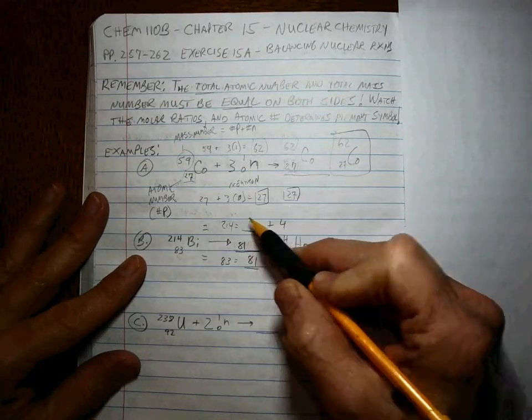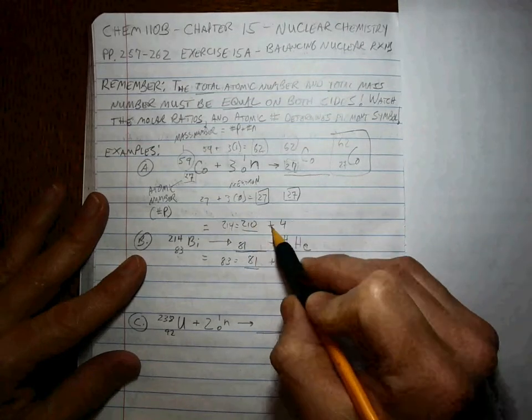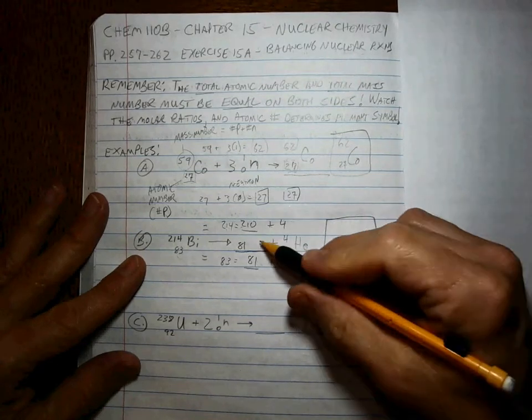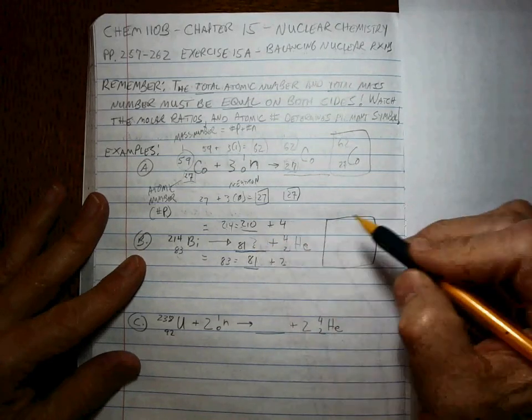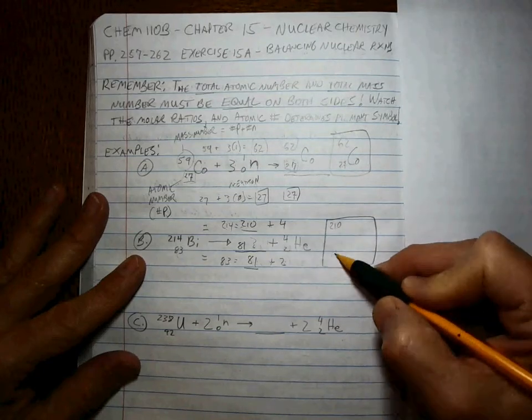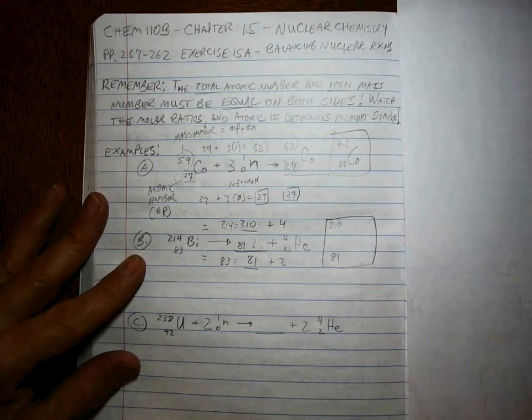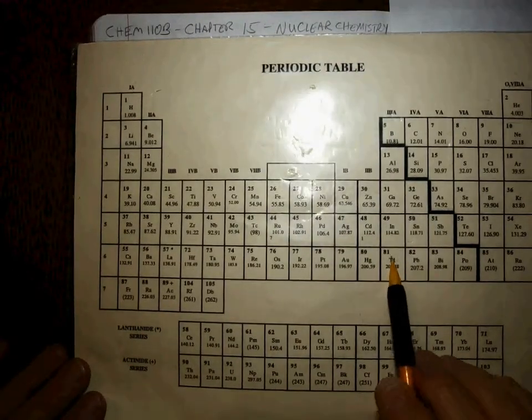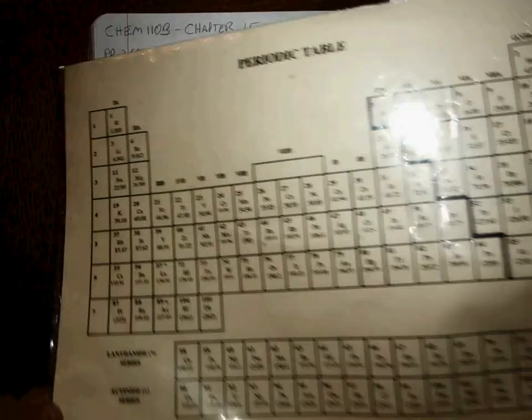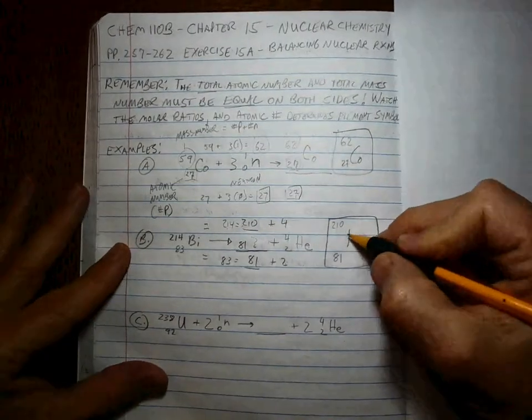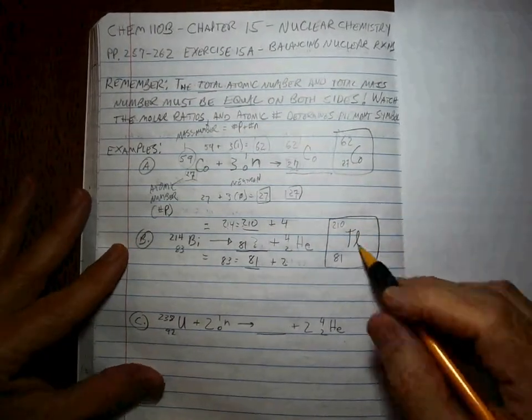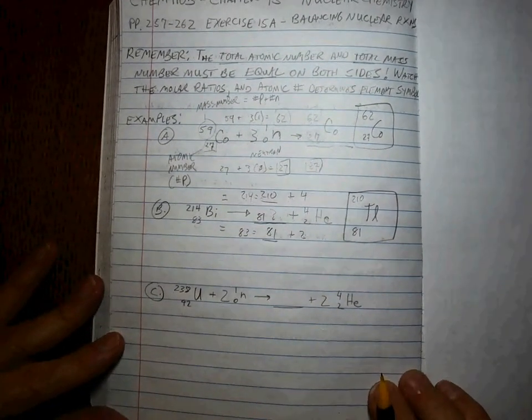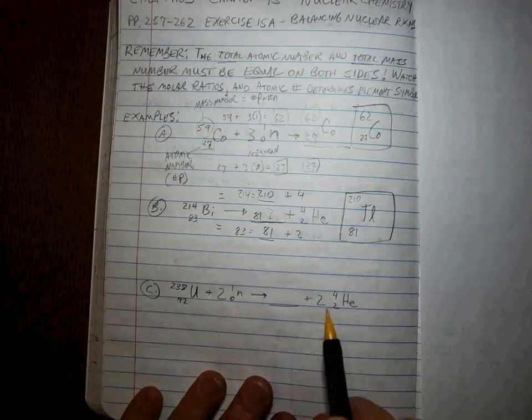And this is 210, right? 210, because 210 plus 4 is equal to 214. So the answer here for what is this, is something 210 with the elemental atomic number of 81. So you look up what 81 is, that's Tl. These are really very easy. You have no business messing this up as long as you're careful with the molar ratios.